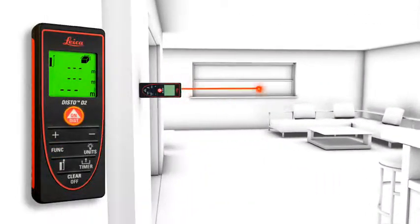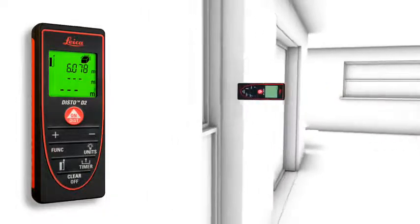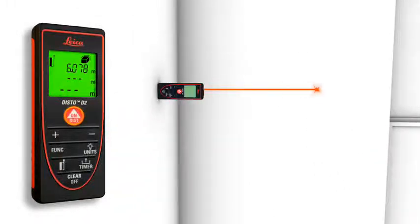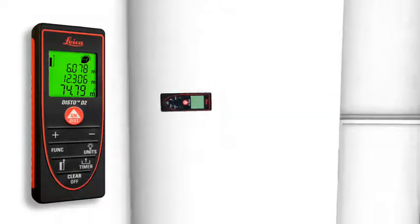Two to three simple measurements are enough and the Leica Disto D2 calculates fast and precise wall and ceiling areas as well as volumes. Single and final results can be displayed at the same time due to the three-line display.